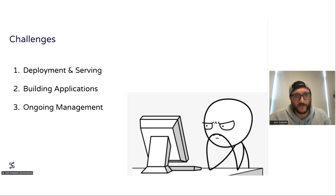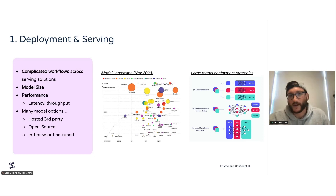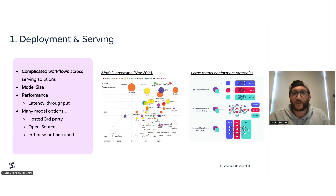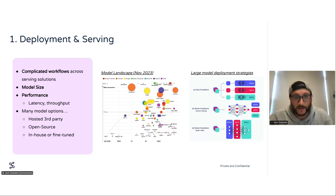For deployment and serving, these are complicated workflows. You have various different model sizes, requirements around latency, and decisions around using API-based models — are you going to use the Azure service of OpenAI, are you going to use Groq, or are you going to bring it in-house? There's also a lot around large model deployment strategies: data parallelization and being able to distribute the workload of those LLMs in various manners.